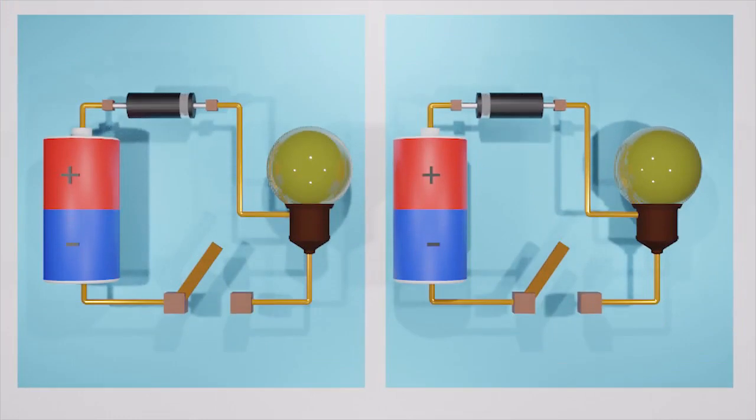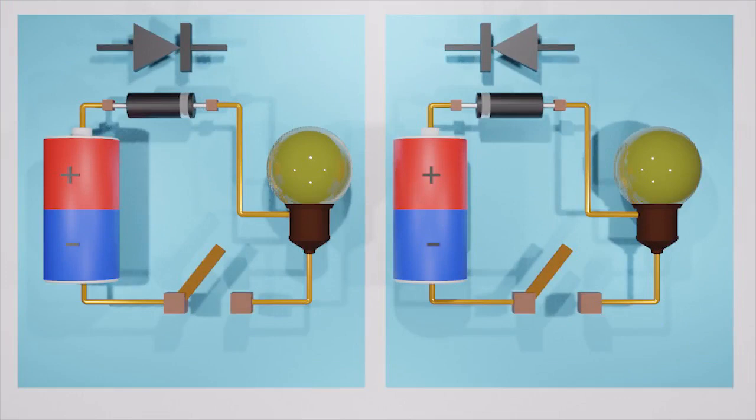Here we have two simple circuits. Look at the diodes carefully - they are in opposite directions. Let's see what will happen after the switch is on. Only one circuit is working.